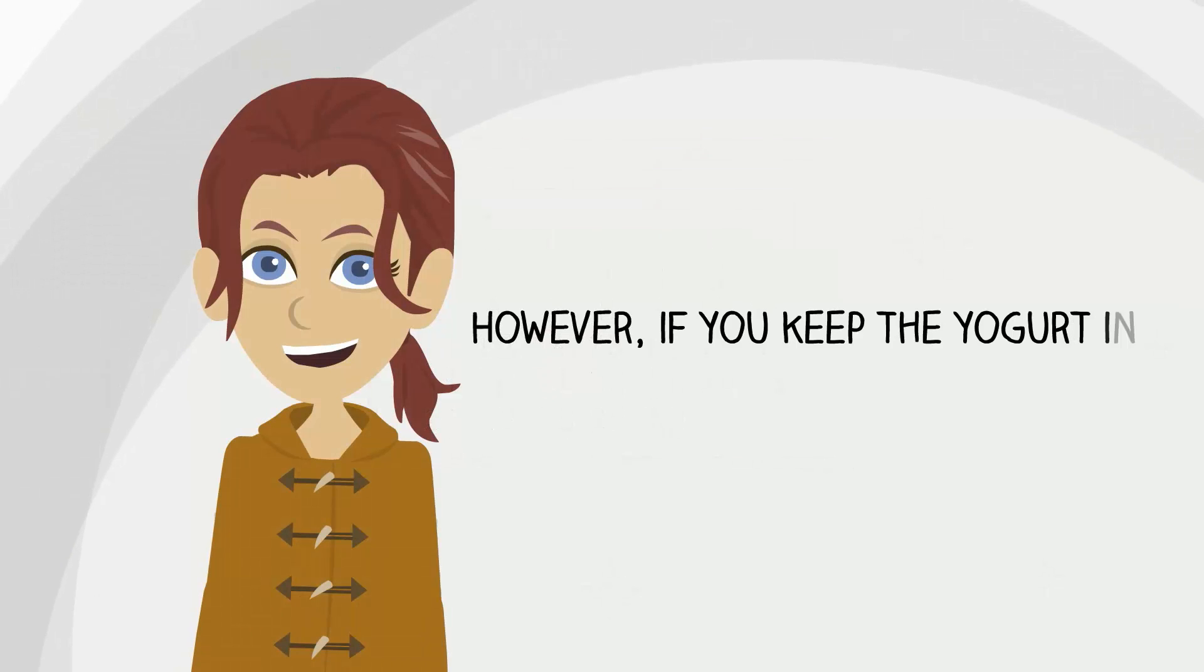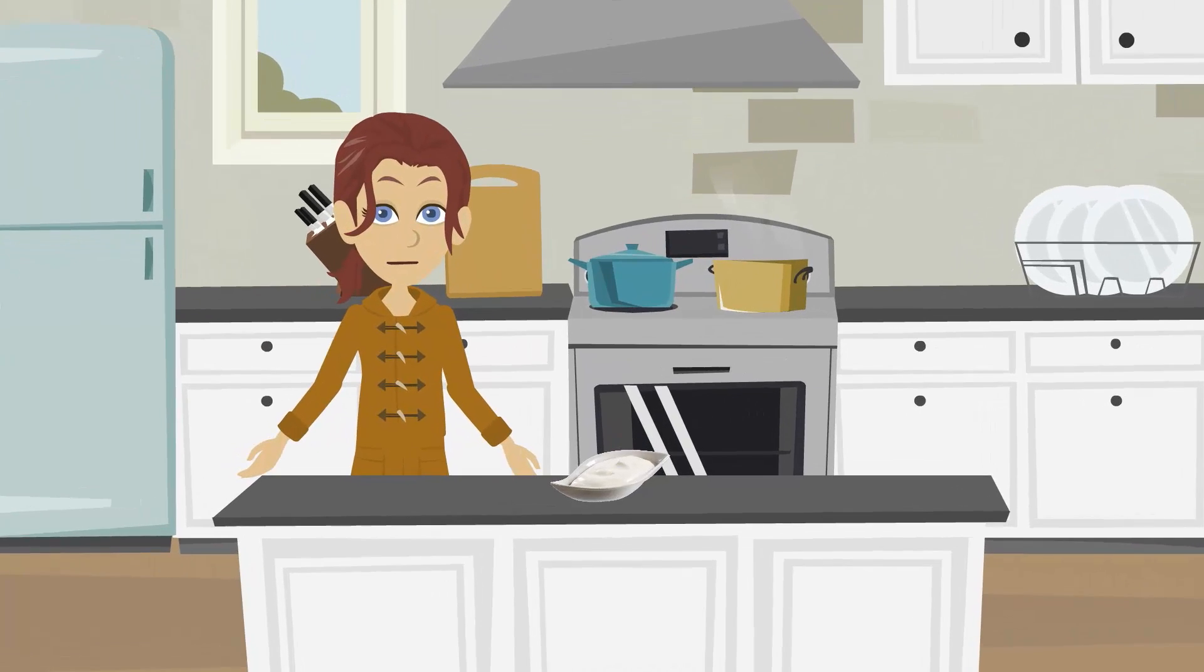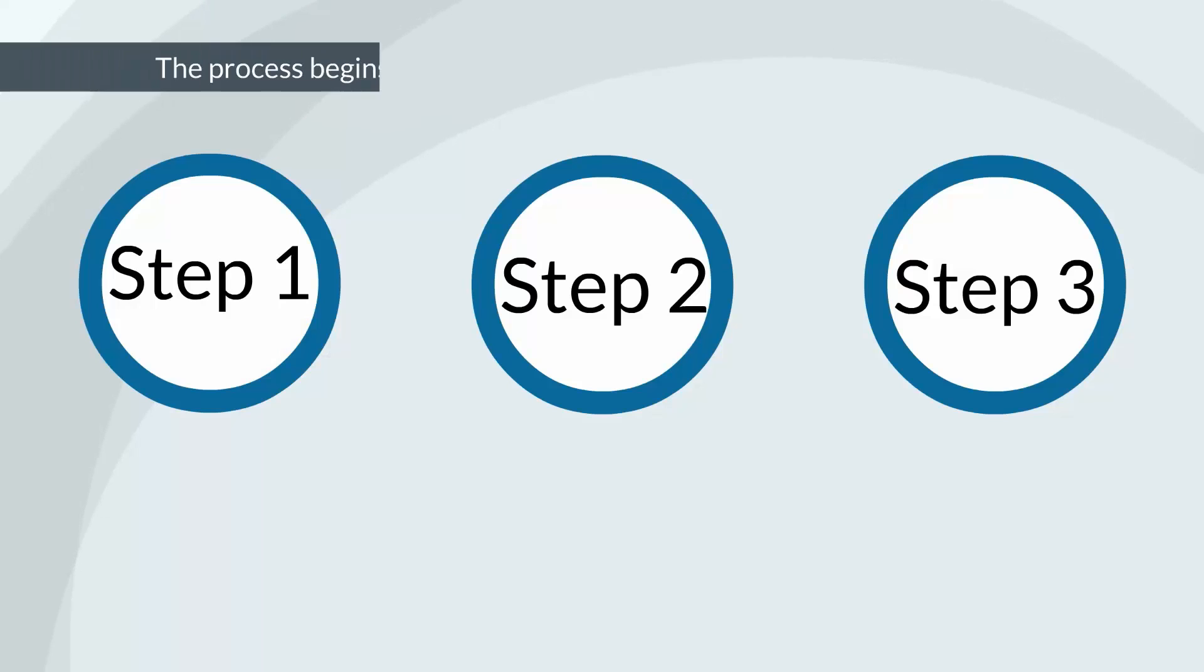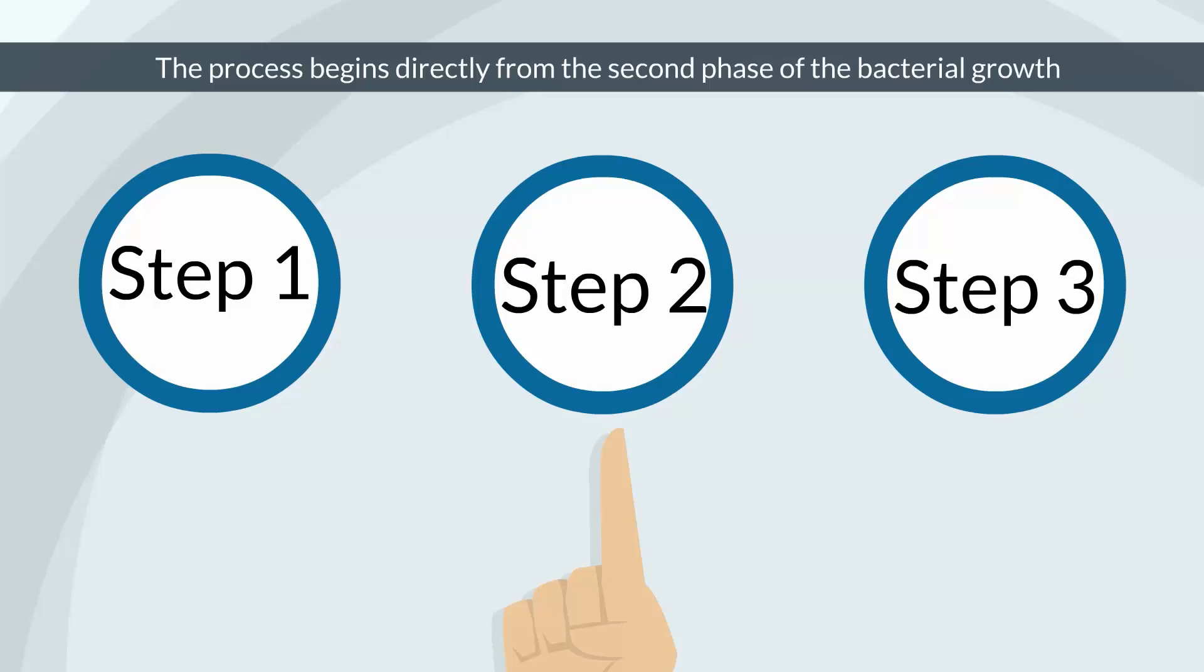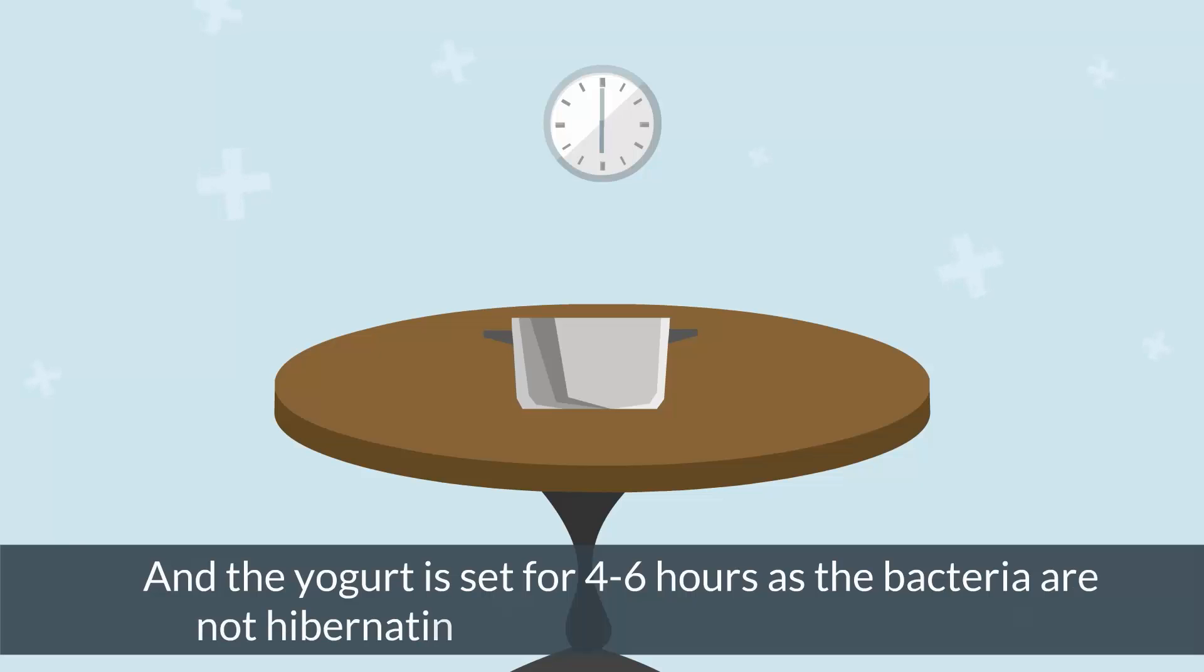However, if you keep the yogurt in the fridge, it will not start soon. If you make yogurt with ready yogurt plus milk, the process begins directly from the second phase of bacterial growth and the yogurt is set for 4 to 6 hours, as the bacteria are not hibernating and start working straight away.